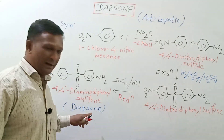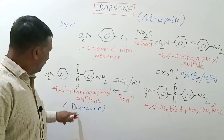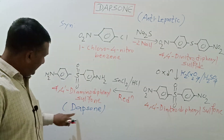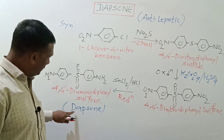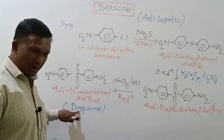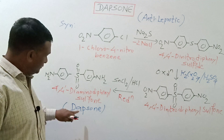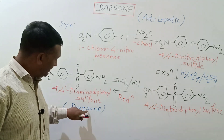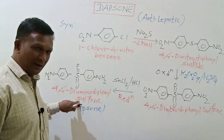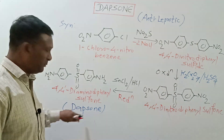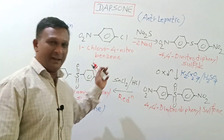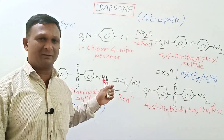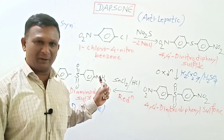By the name you can easily see the relationship with this structure. 'DAP' stands for diaminodiphenyl, 'S' stands for sulf, and 'ONE' stands for one — so it becomes Dapsone. That is about the synthesis of Dapsone. Thanks for watching the video, please like it, share it, and don't forget to subscribe. Thank you.